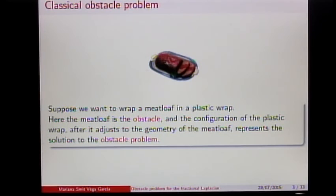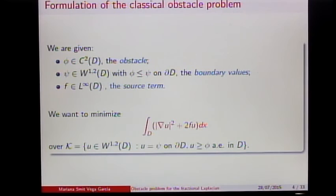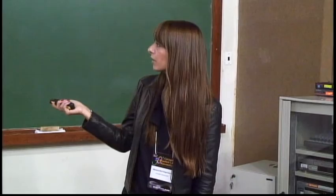Mathematically, you're given a function phi of class C² on the domain, which is the obstacle. We have a function psi in W^{1,2}, the Sobolev space, which gives boundary values satisfying a compatibility condition on the boundary. We have a source term f in L^∞. We want to minimize the energy — the gradient of U squared plus 2 times the source term times U — over functions in W^{1,2} which coincide with psi on the boundary and are greater or equal than phi almost everywhere on the domain.